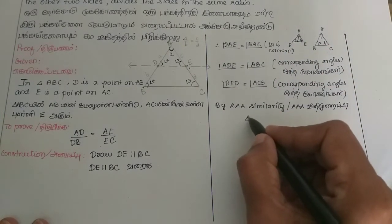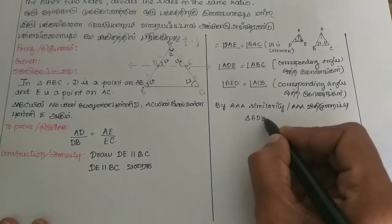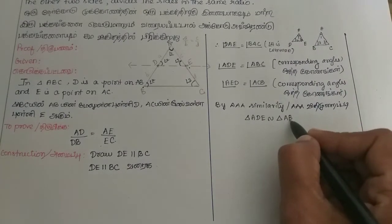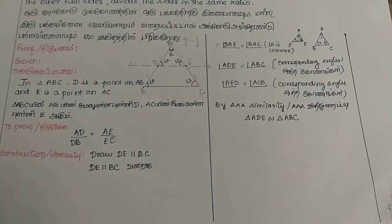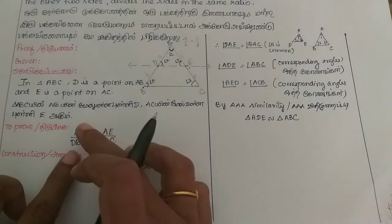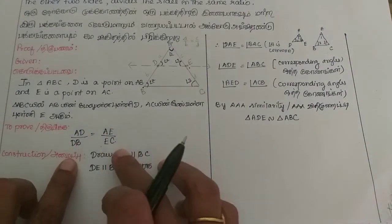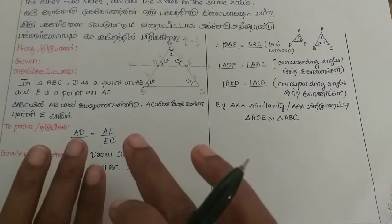Therefore, triangle ADE is similar to triangle ABC. So from the similarity, AD/DB equals AE/EC — this is what we prove.